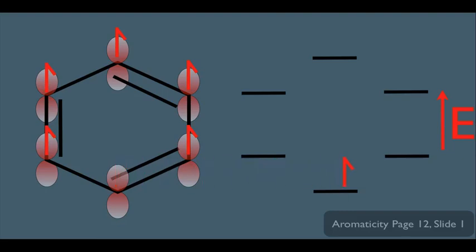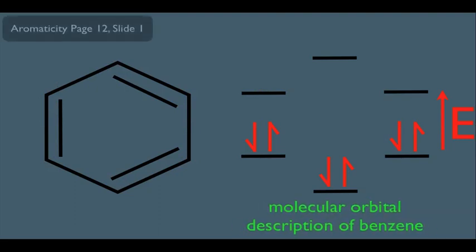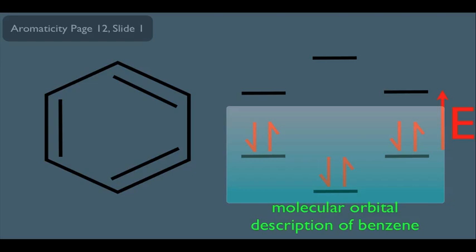One electron goes in the lowest energy orbital, and another one doubles up with it. The next available molecular orbitals are above this orbital, so the next electron fills here and another one fills here. These two orbitals are at the same energy level, so we first separate the electrons. We have two more electrons to fill, so now we double up — one goes here and one goes right here. This is the molecular orbital description of benzene. Notice all of his electrons are in bonding molecular orbitals, which is why benzene is very stable.